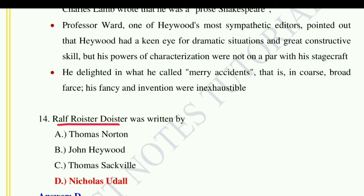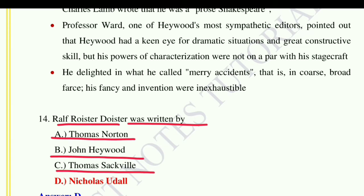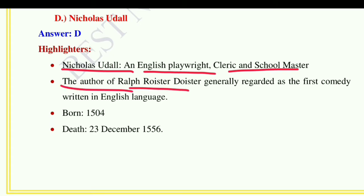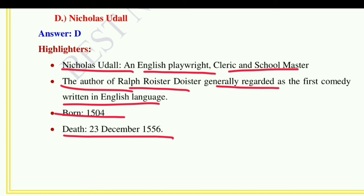Question number fourteen: 'Ralph Roister Doister' was written by — option A: Thomas Norton, option B: John Heywood, option C: Thomas Sackville, option D: Nicholas Udall. The correct answer is option D, Nicholas Udall. Nicholas Udall was an English playwright, cleric, and schoolmaster, and the author of Ralph Roister Doister, generally regarded as the first comedy written in the English language. He was born in 1504 and died on 23rd December 1556.